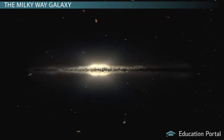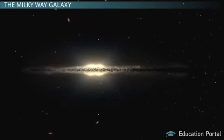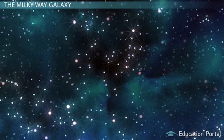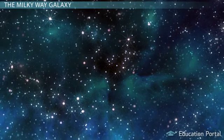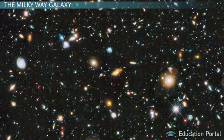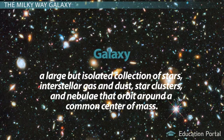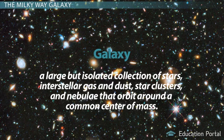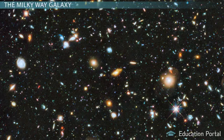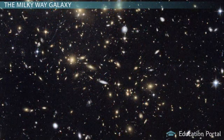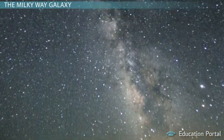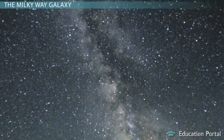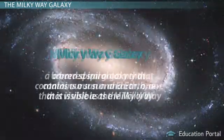This lesson will outline the answer astronomers have found from years of research. When you look up at the night sky, it looks like the stars are pretty evenly distributed all over the cosmos. But the reality is that stars clump together into galaxies. A galaxy is a large but isolated collection of stars, interstellar gas and dust, star clusters and nebulae that orbit around a common center of mass. Galaxies are separated by vast spaces that are mainly empty, and so just about every single thing you see up in the night sky with the unaided eye is part of our galaxy, the Milky Way galaxy.